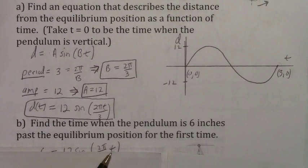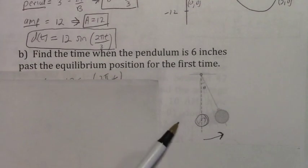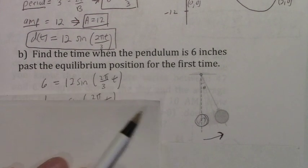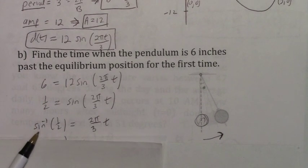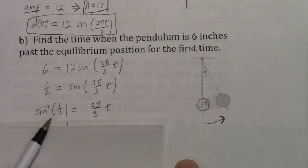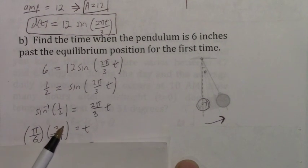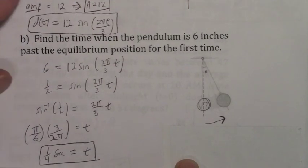Now find when the pendulum is 6 inches past the equilibrium position for the first time. Set the distance equal to 6 and divide by 12. Taking the inverse sine gives pi over 6. Multiplying by the reciprocal 3 over 2 pi, the time turns out to be 1/4 second.